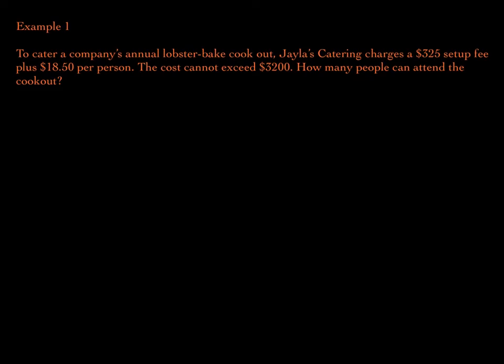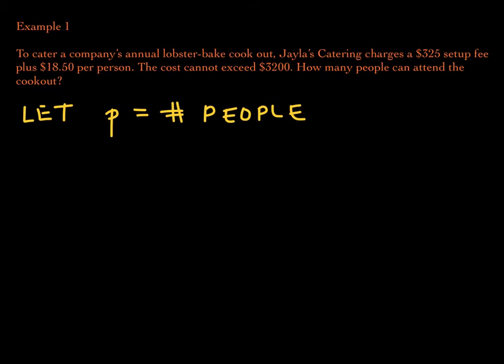To cater a company's annual lobster bake cookout, Jayla's Catering charges a $325 setup fee plus $18.50 per person. The cost cannot exceed $3,200. How many people can attend the cookout? Let P equal the number of people at the cookout. Every time you see P, that means the number of people at the cookout.